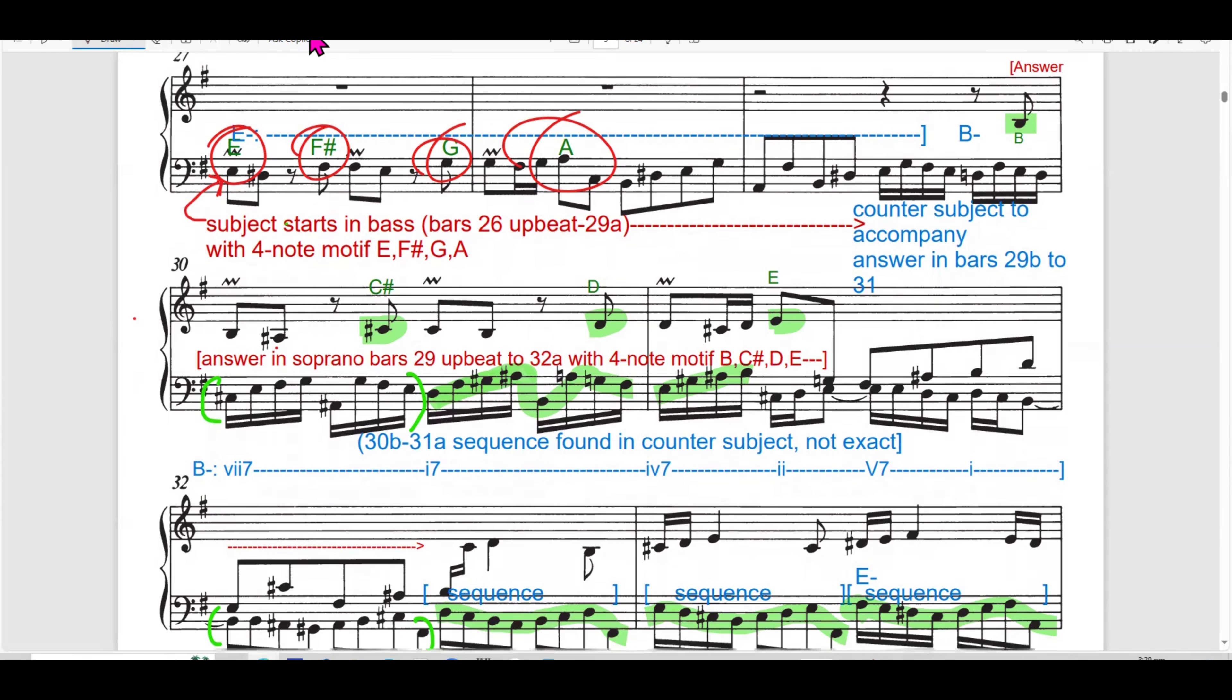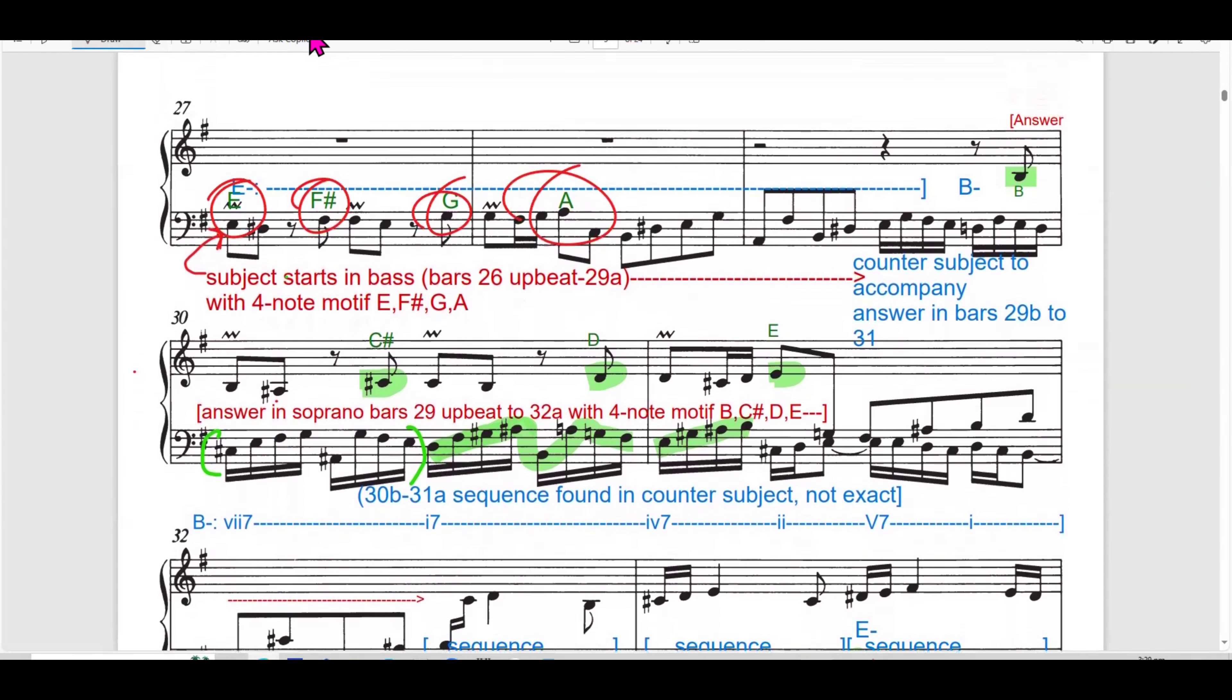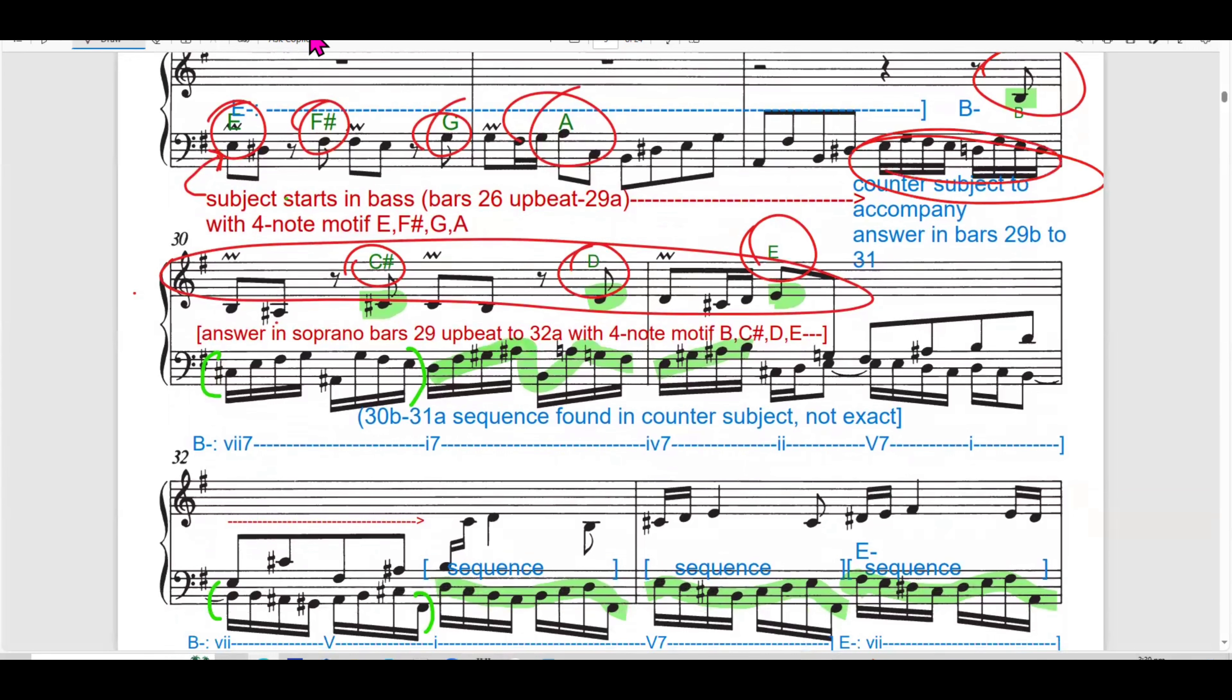From bar 27 to 39, Bach further elaborates on polyphonic complexity in this fugue and introduces new harmonic progression that transitions through multiple key areas. In this section, Bach employs subject restatement, answer, counter subject, and motivic sequences to craft a rich texture. The harmonic underpinning supports the tonal modulation, enhancing dramatic tension.